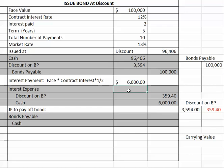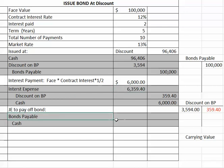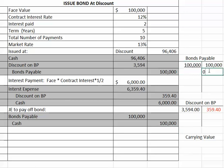Then you plug in the amount for interest expense, which will be $6,359.40. As you can see, the amortization of a discount adds to the amount of interest expense you report on the income statement. At the end of five years, you're going to pay off the bond: debit bonds payable for $100,000 and credit cash for $100,000. At that point, you can take that liability off your books because you no longer owe bonds payable.